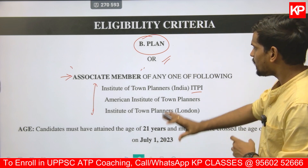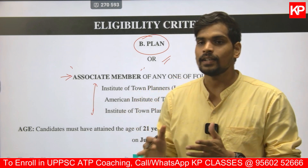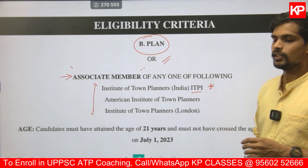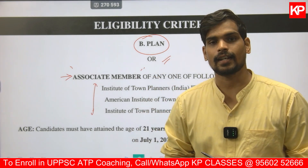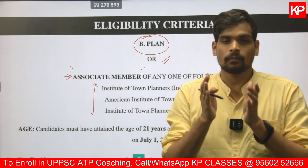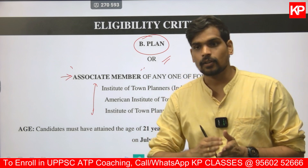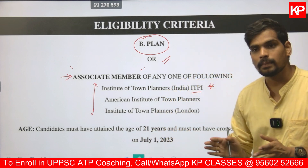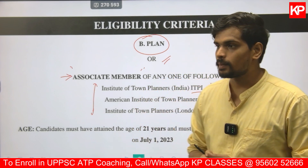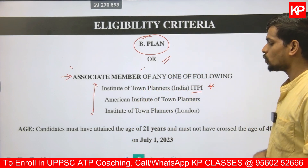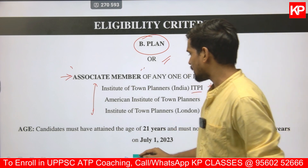The only eligibility requirement is you should have a B.Plan, or a bachelor's with any degree plus an M.Plan recognized by ITPI. The official advertisement also publishes a list of 28 ITPI-recognized colleges and corresponding eligible courses. You can check that list to confirm whether your qualification makes you eligible for this UPPSC Assistant Town Planner recruitment.